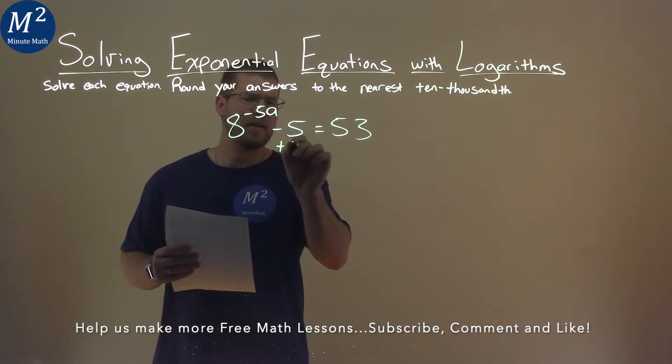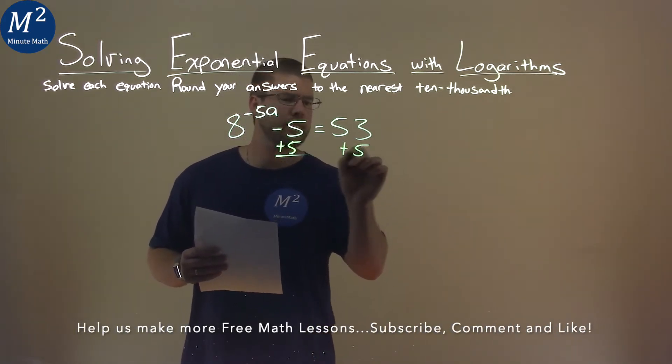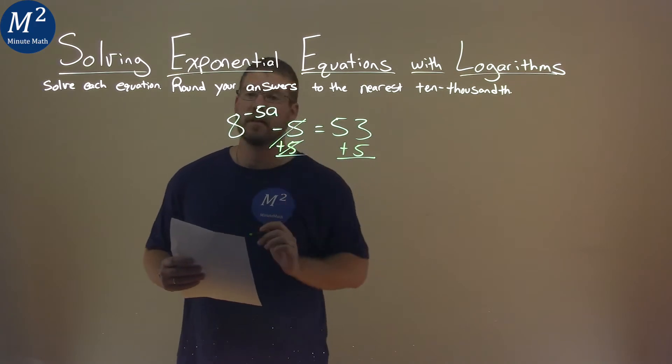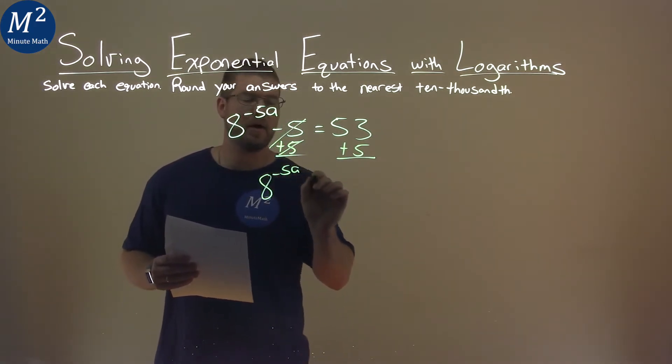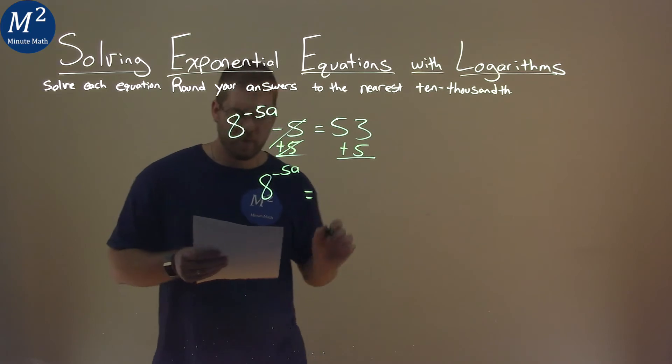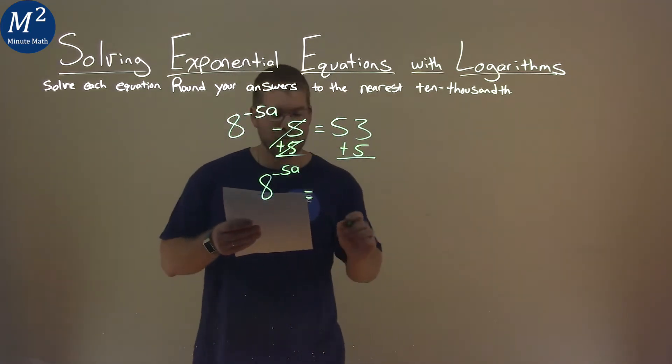First thing I want to do is add 5 to both sides. This cancels the 5 on the left, giving me 8 to the negative 5a power left over. On the right, 53 plus 5 is 58.